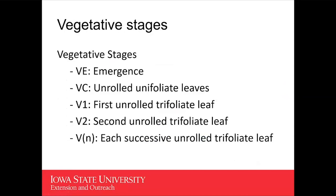As we jump into soybean staging, there are some distinct differences between soybean staging and corn staging. Obviously we're looking at different plants, but the staging systems are a little bit different as well. On the vegetative staging we start with the VE stage or the emergent stage, then we move into the VC stage where we're looking at unrolled unifoliate leaves, and then we go into V1 which is our first unrolled trifoliate leaf, V2 the second unrolled trifoliate leaf, and then we continue on.